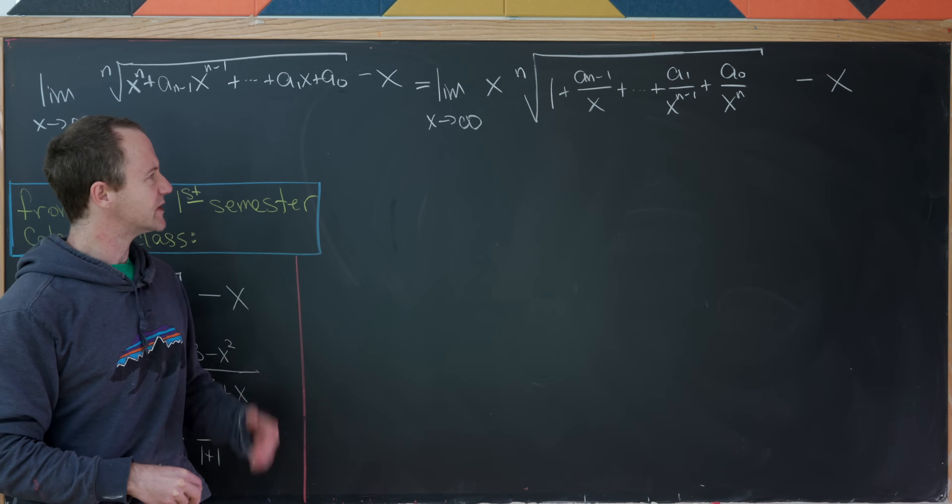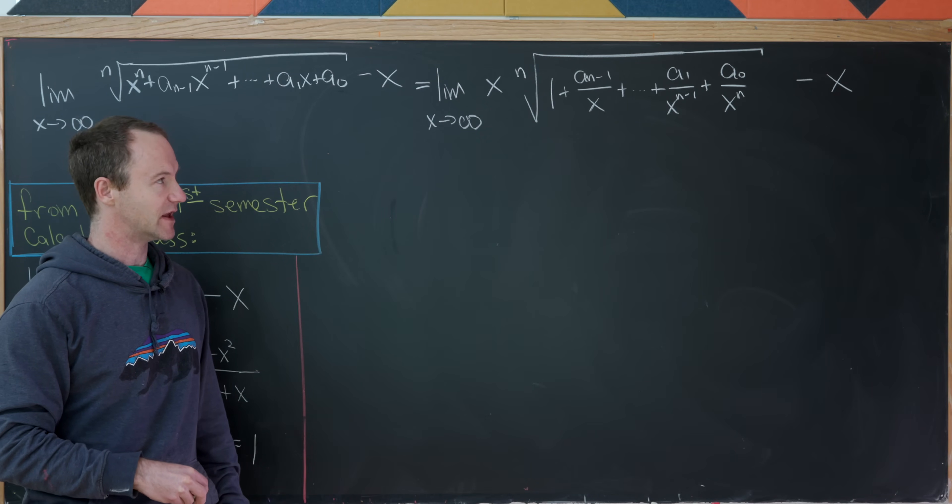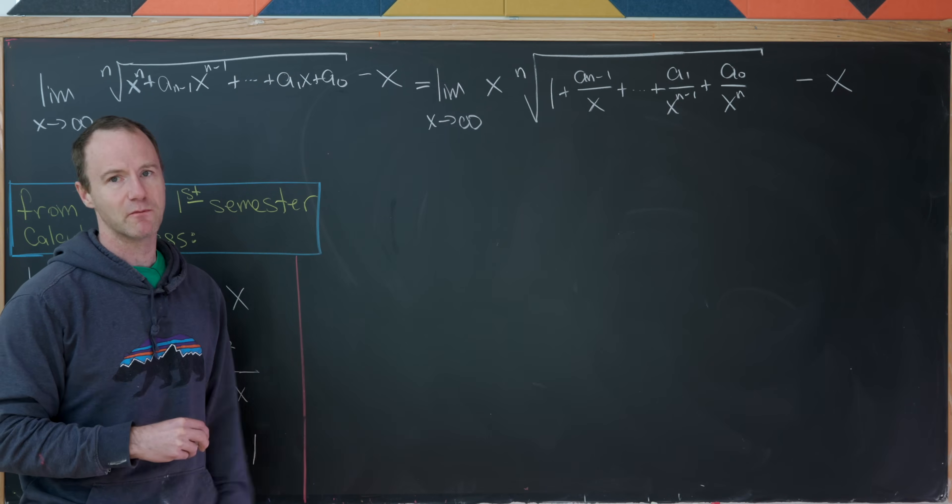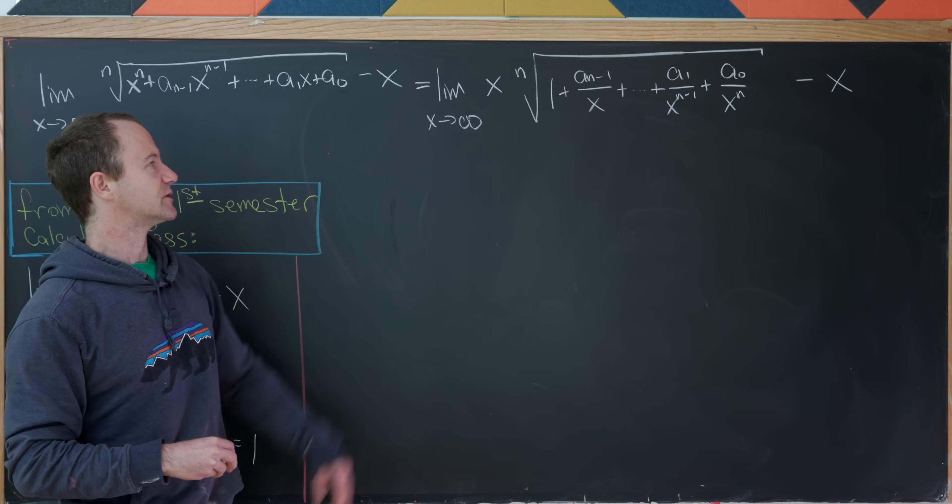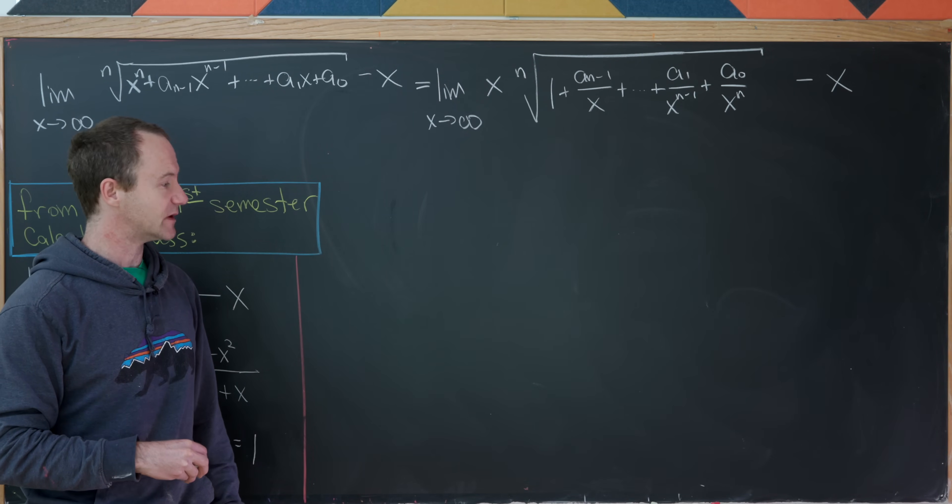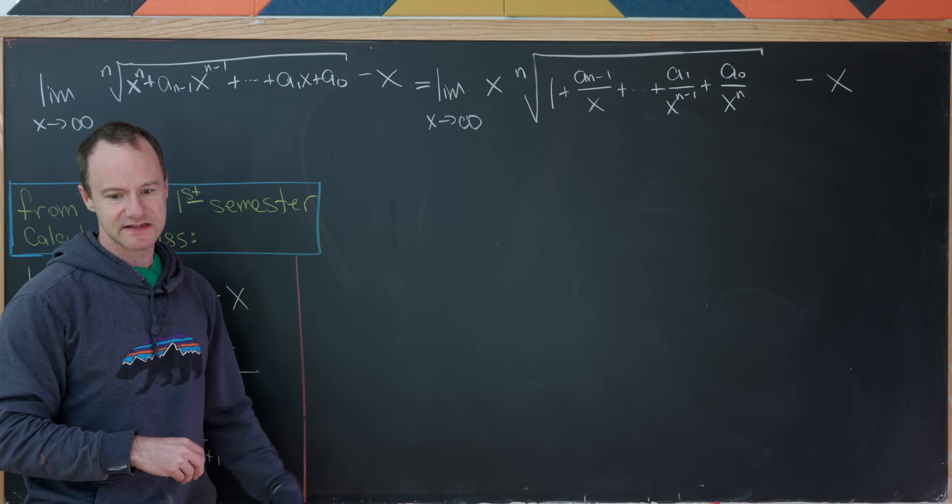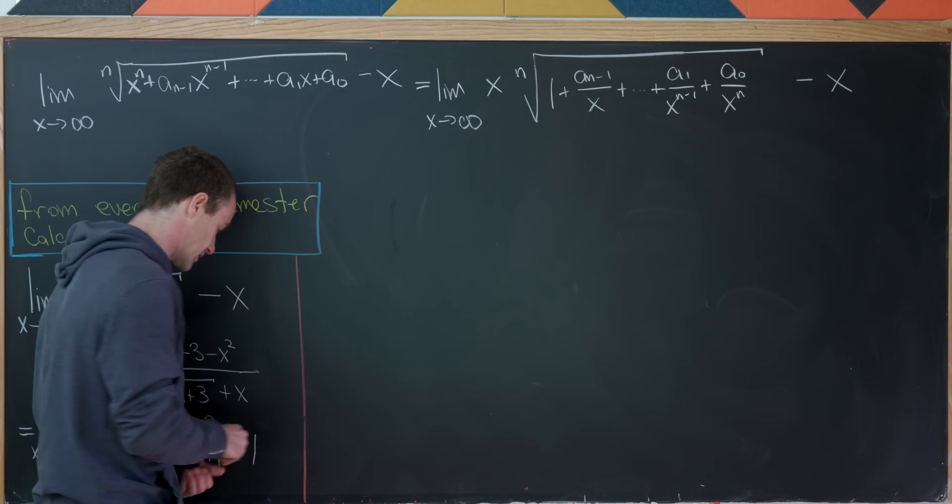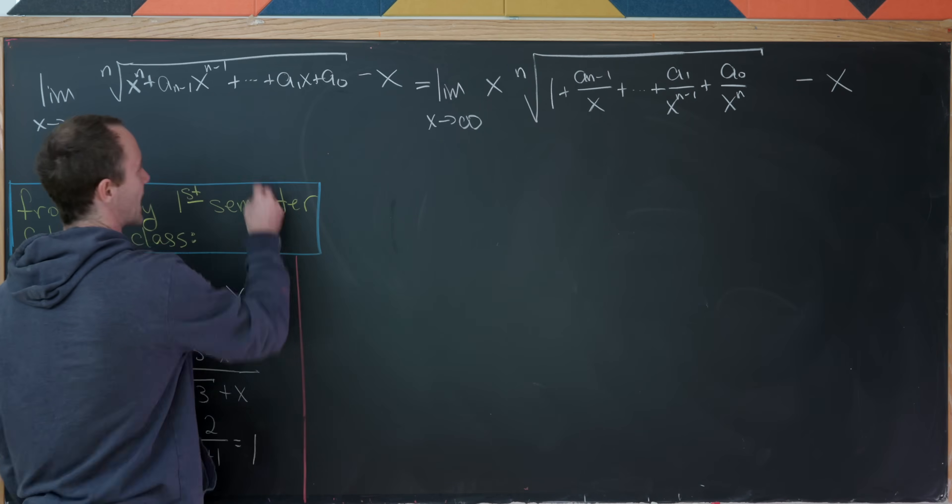But now I'm actually going to do a change of variables for my limit here. That'll make the limiting technique a little bit more apparent. So instead of taking x to infinity, let's replace x with 1 over h and take h to 0.